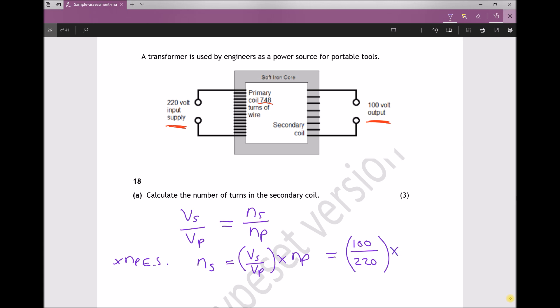And the number of turns on the primary is 748, giving me the number of turns on the secondary equal to 340 turns.